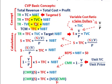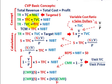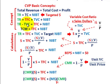If we rearrange the equation, we take total revenue and move total variable cost over to this side of the equation. We come up with: total revenue minus total variable cost equals total fixed cost plus net income before taxes. The total contribution margin is just the difference between total revenue and total variable cost, and that equals fixed cost plus the targeted net income before taxes.